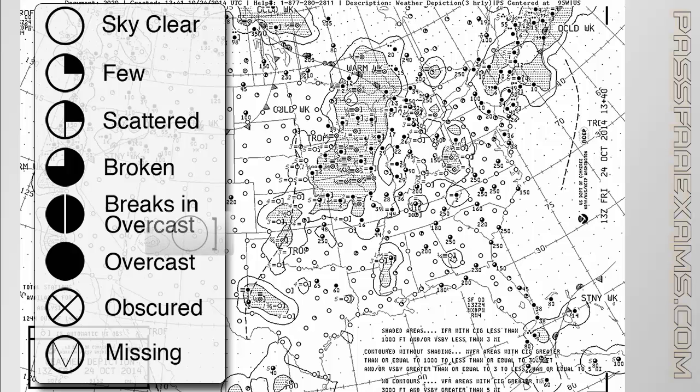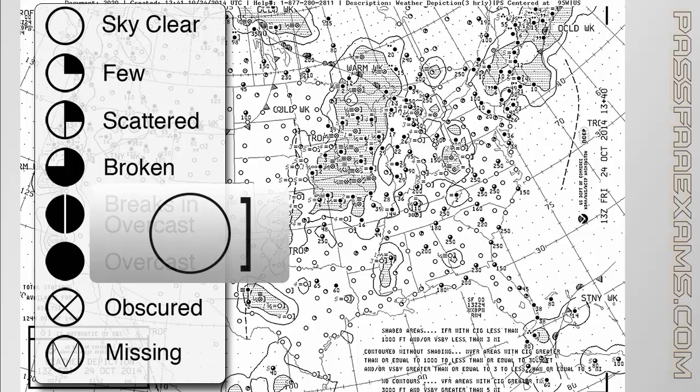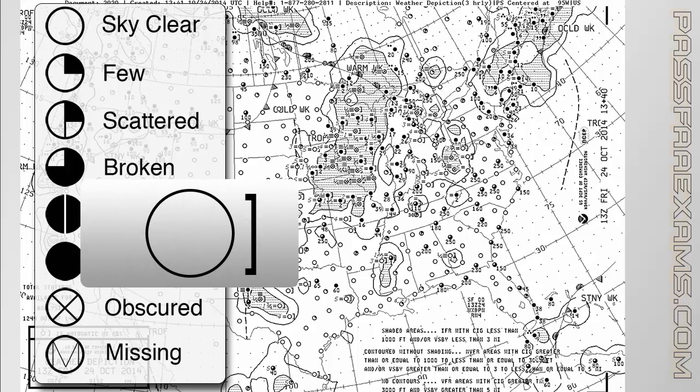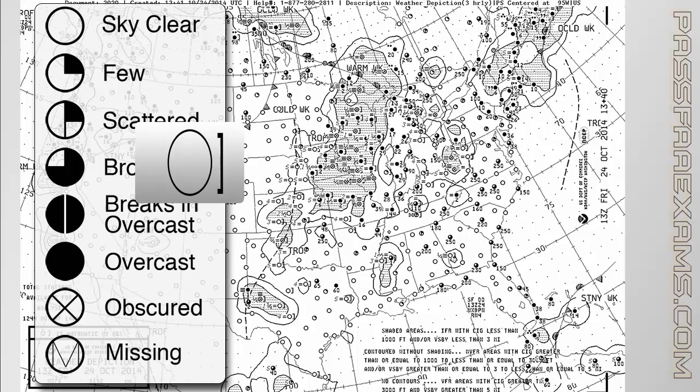Also, if there is a bracket next to the station, it signifies that station is automated. This is a test question on both the private and instrument knowledge test — a bracket means automated station.